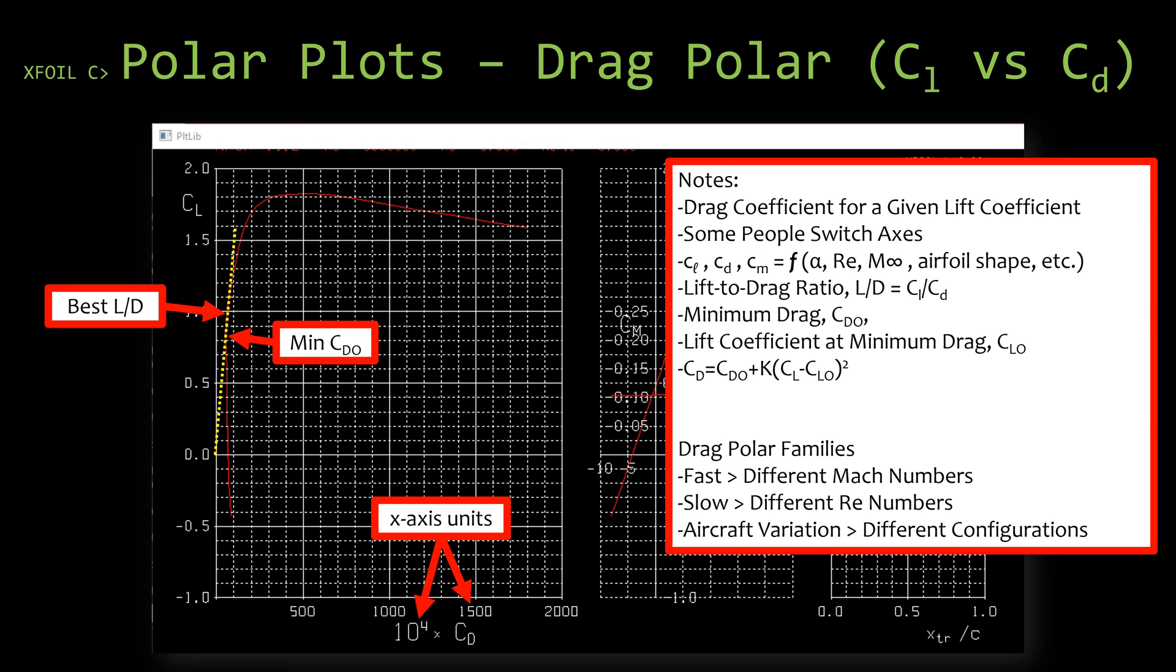XFOIL uses some funny units for that. It will actually scale up the value. So when you see a 1000 value on the coefficient of drag axis, that is actually a coefficient of drag of 0.1. This is especially important if you're trying to adjust the limits of the axes because the command to change the limits is looking for the real value, whereas if you're just looking at the plot it's looking at a scaled up version.